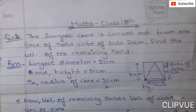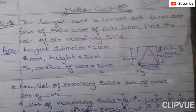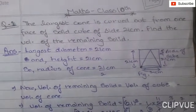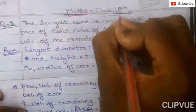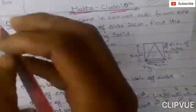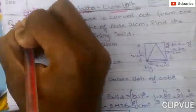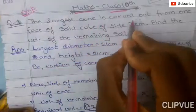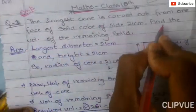Hello friends, welcome to the All About Study channel. Today we will solve a question of math from Class 10th. The name of the chapter from which we are solving the question is Volume and Surface Area, which is a very important chapter of Class 10th. So let's start.